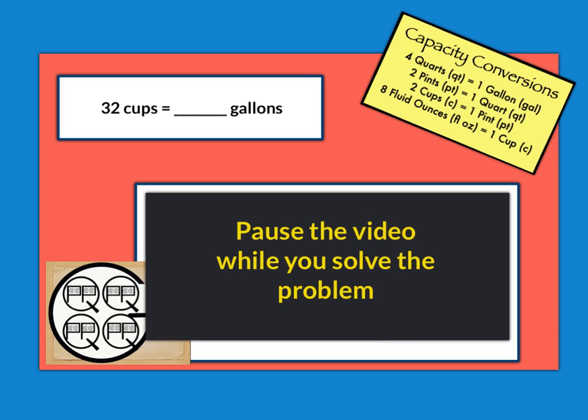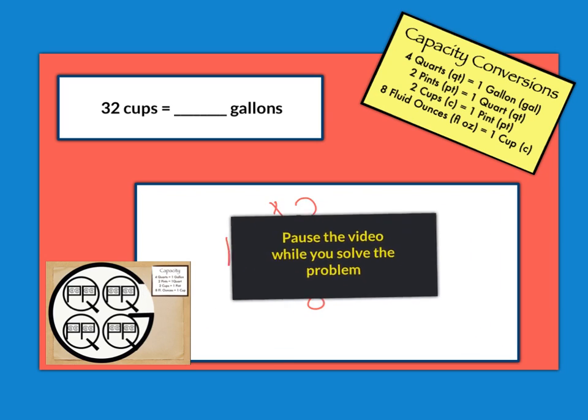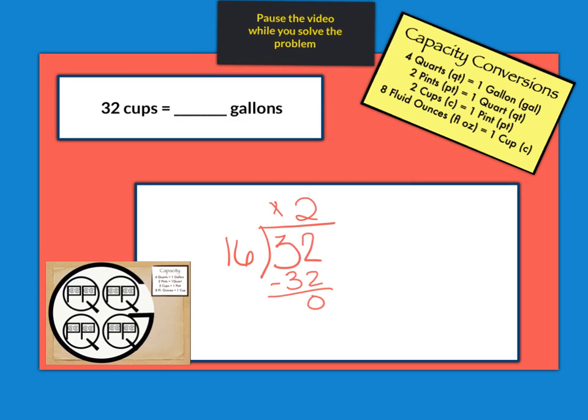Okay, hopefully you had time to solve the problem. I'm going to move this out of the way. Now I have 32 cups. Cups being the smaller unit, that means I'm going to need fewer gallons than I would cups. So I'm going to be dividing. Up here I can see I don't have any direct connection from cups to gallons. But if I look down here in the big G and I count, I have 2, 4, 6, 8, 10, 12, 14, 16 cups in each gallon. So I would divide 32 by 16 and get my answer of 2 gallons.